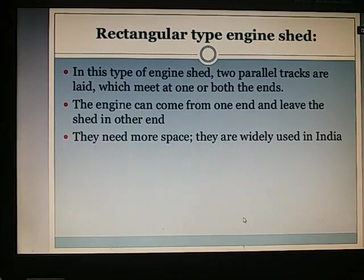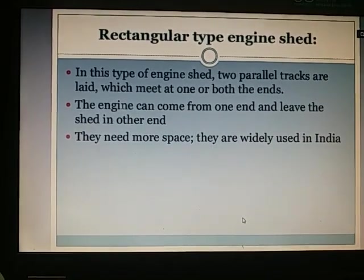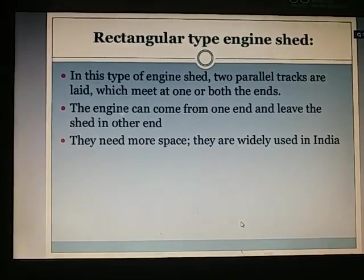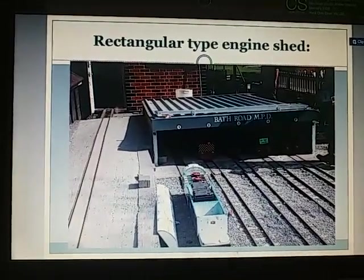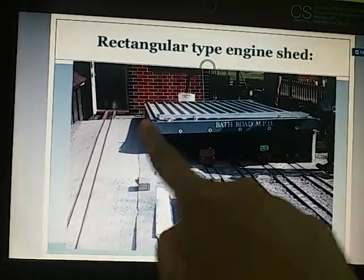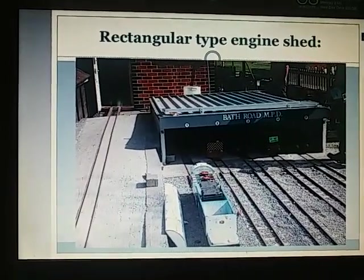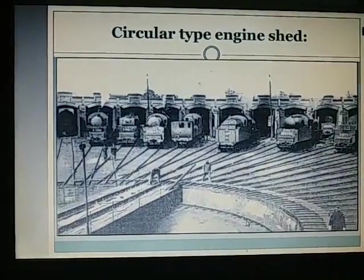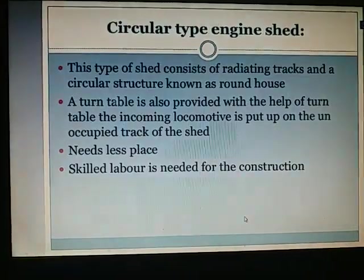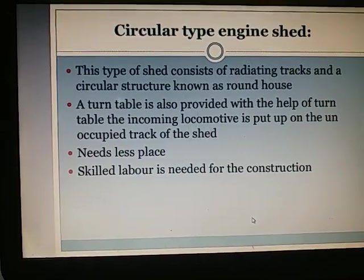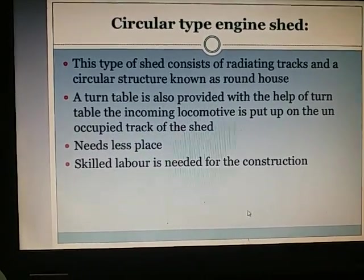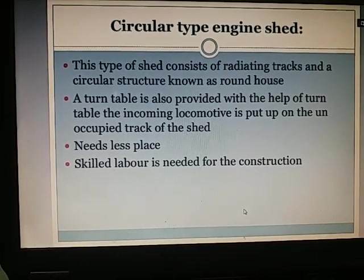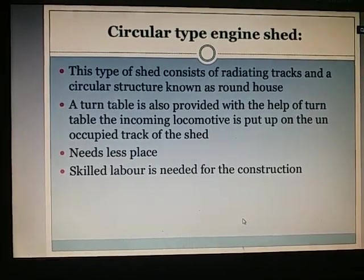Types of engine sheds: The straight or through shed type meets at one or both ends — the engine can come in from one end and leave the shed from the other end. They need more space and are widely used in India. The round house type consists of radiating tracks and a circular structure; a turntable is also provided. The incoming locomotive is put on an unoccupied track of the shed. It needs less space and less labor for construction.